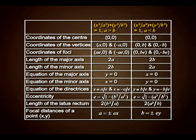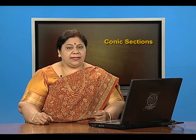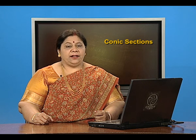The focal distances of a point (x, y) are a plus or minus ex when a is greater than b, and b plus or minus ey when a is less than b. So students, hope you enjoyed studying the concept of ellipse under conic sections. Thank you.